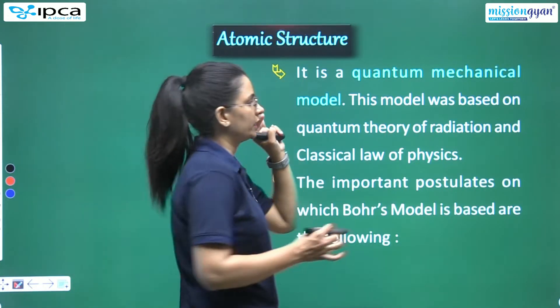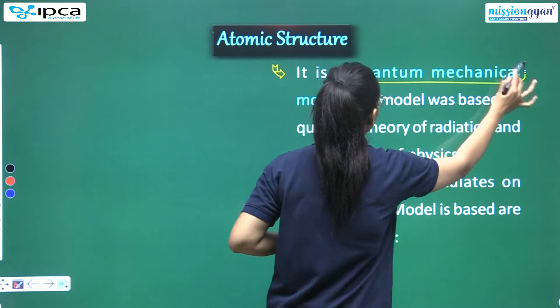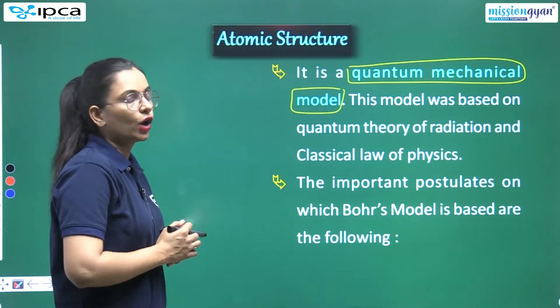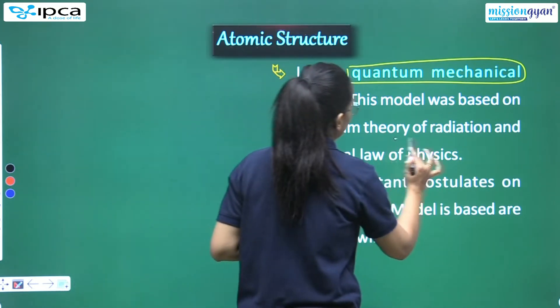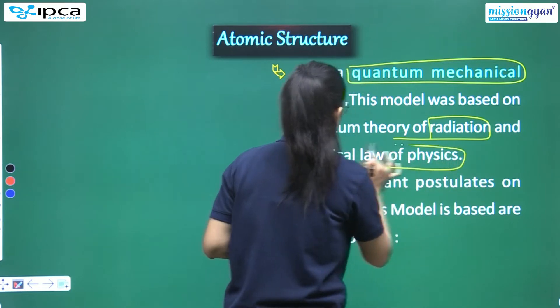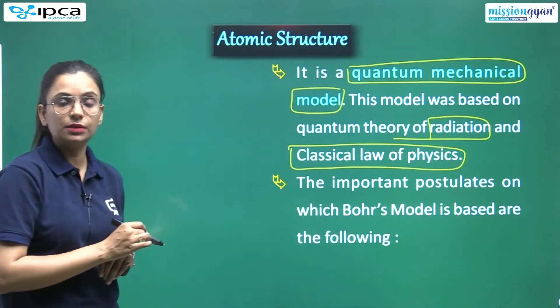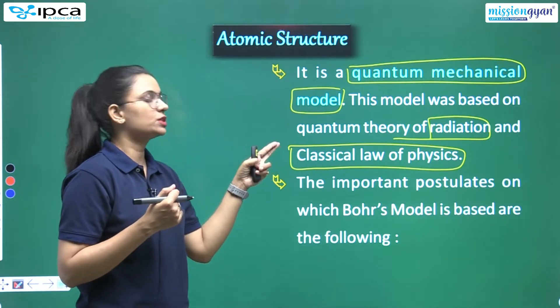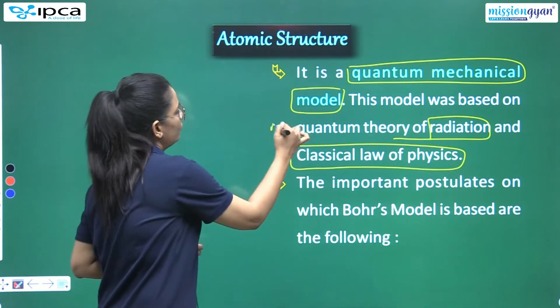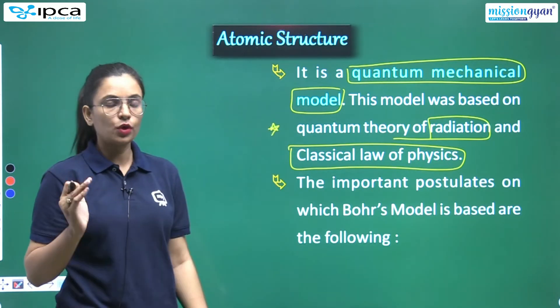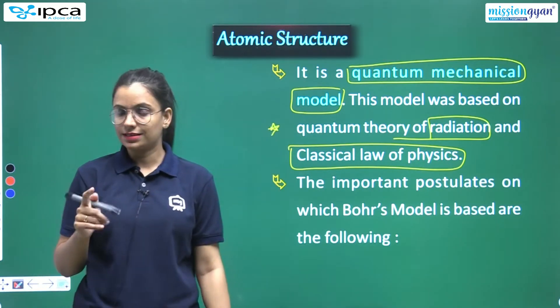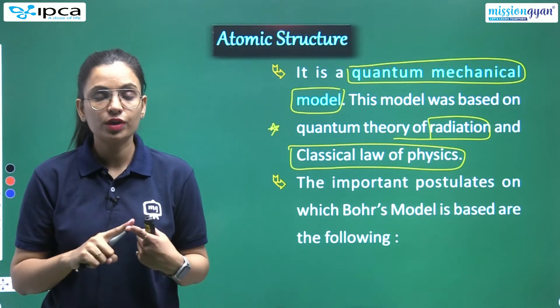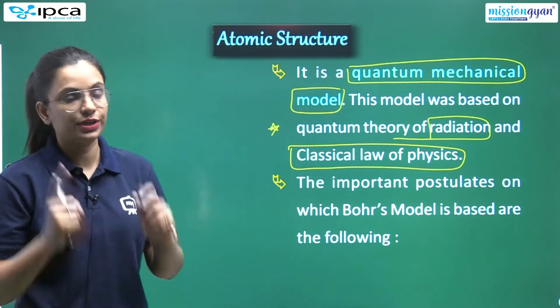Now I will tell you - it is a quantum mechanical model, the Bohr atomic model. This model is based on quantum theory of radiation and classical law of physics. This question is asked in theoretical aspects. So you will say it is totally based on quantum theory of radiation and classical law of physics. Now I will discuss some important postulates one-to-one with you so there is no confusion.